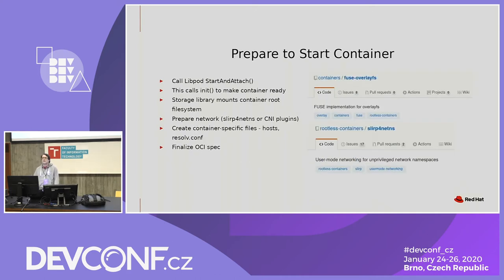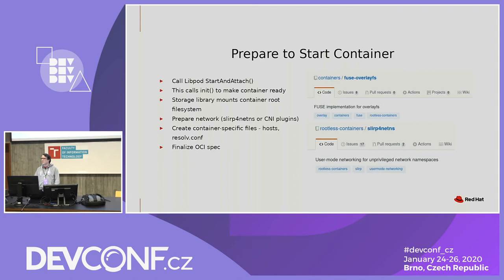Now we're going to prepare to start the container. If we were running just podman create, we would have halted right there. But we're going to call something called start and attach in libpod. The first step of this is an internal function called init — it makes the container ready to start but stops right before it starts it. The first step of init is to get the container mounted. We need to mount it up using overlayfs on root, which takes all those layers downloaded from the image plus that read-write top layer we made earlier and merges them all into one directory that we can access as a container file system.